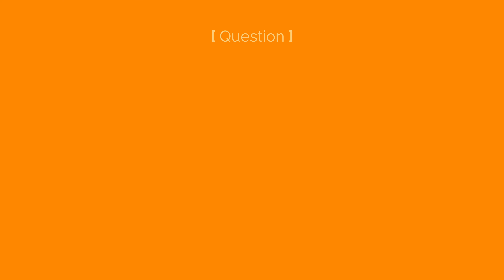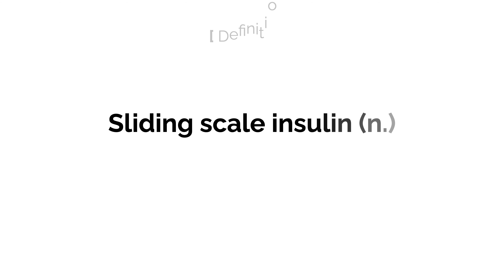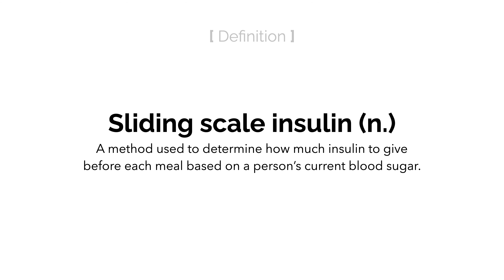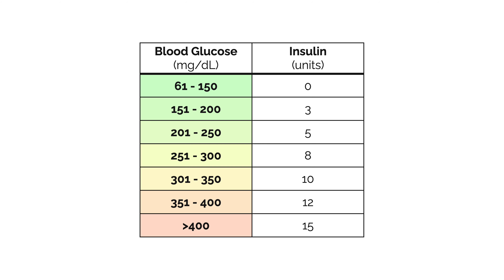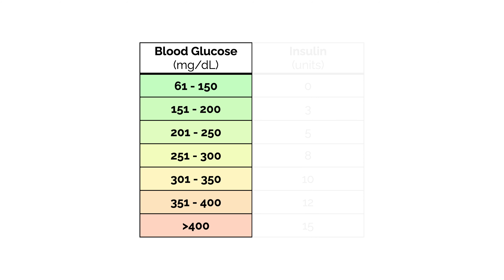Sliding scale insulin is a term that you might have heard a lot right after you were diagnosed, but what is it? Well, sliding scale insulin is a method used to determine how much insulin to give before each meal based on a person's current blood sugar. It is one of several methods that can be used to determine insulin dosage. When using a sliding scale, your doctor or other healthcare professional will provide you with a scale that tells you how many units of insulin to give based on your current blood sugar.